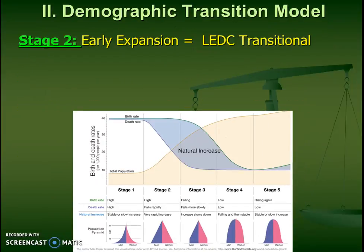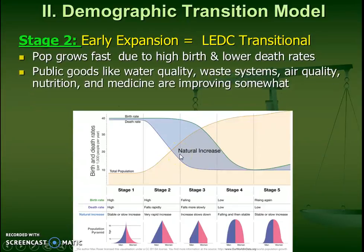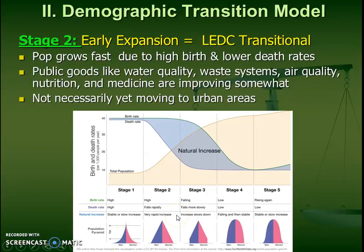The second stage is a bit more common in LEDCs. Population grows rather fast. Birth rate is still really high, but what we see happening to death rate is that it's starting to lower. This is because living conditions are starting to get a little bit better — things like water quality, waste management, air, nutrition, and medicine are starting to improve. We're starting to get a little bit more industrialized. The age-sex pyramid still shows a really wide base, but it's not as extreme as stage one, and we're probably still on the rural end of the spectrum.